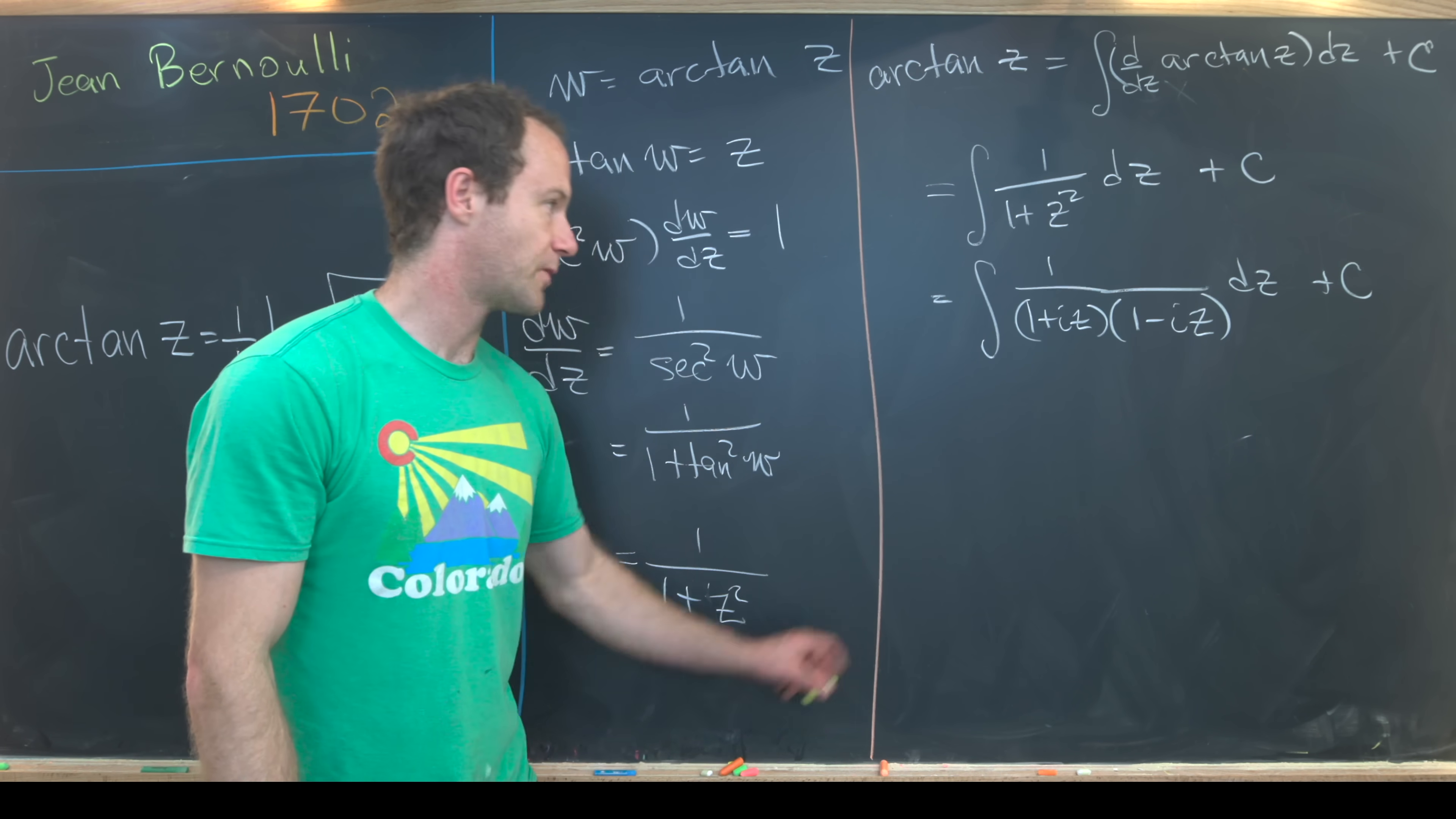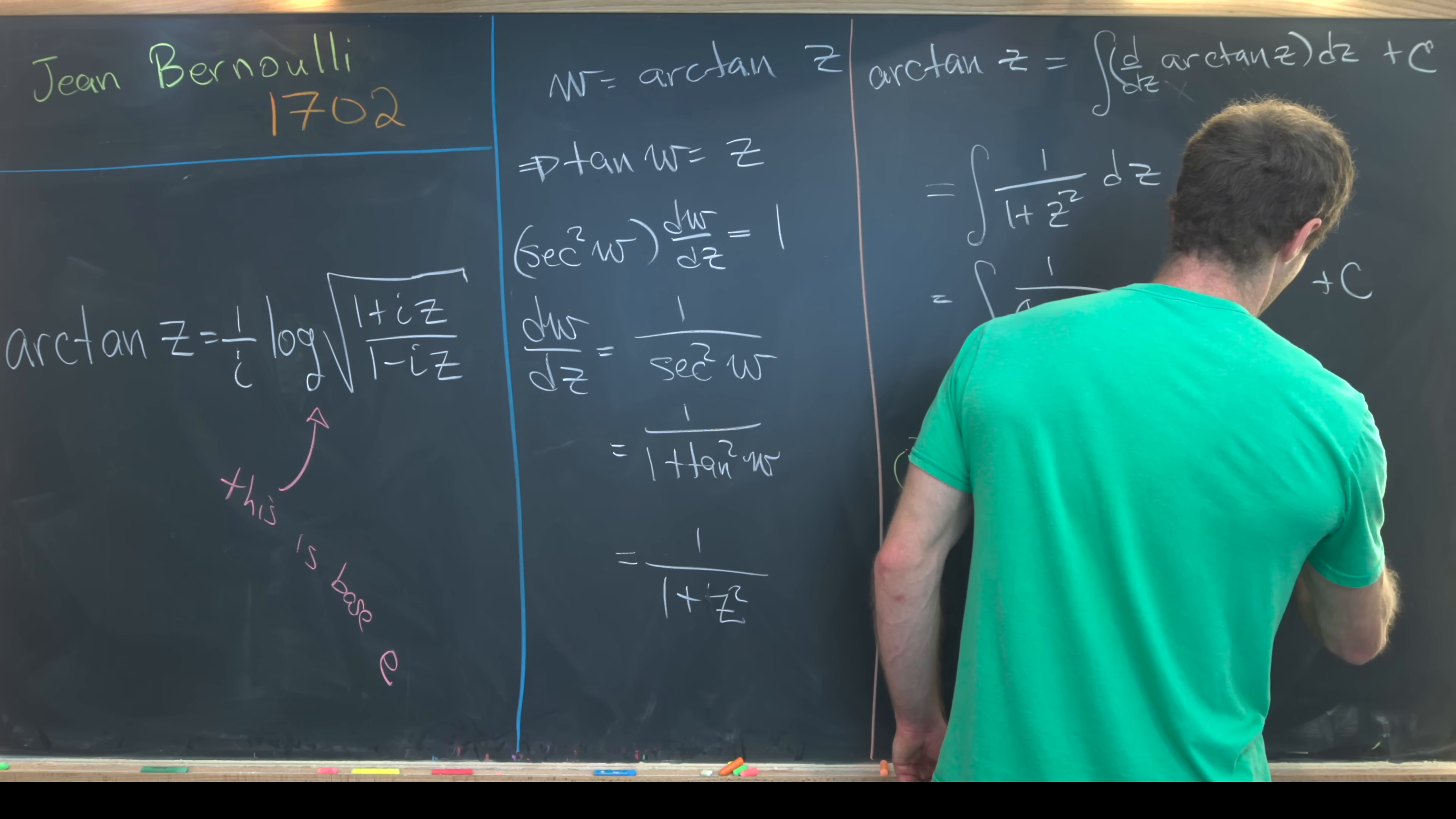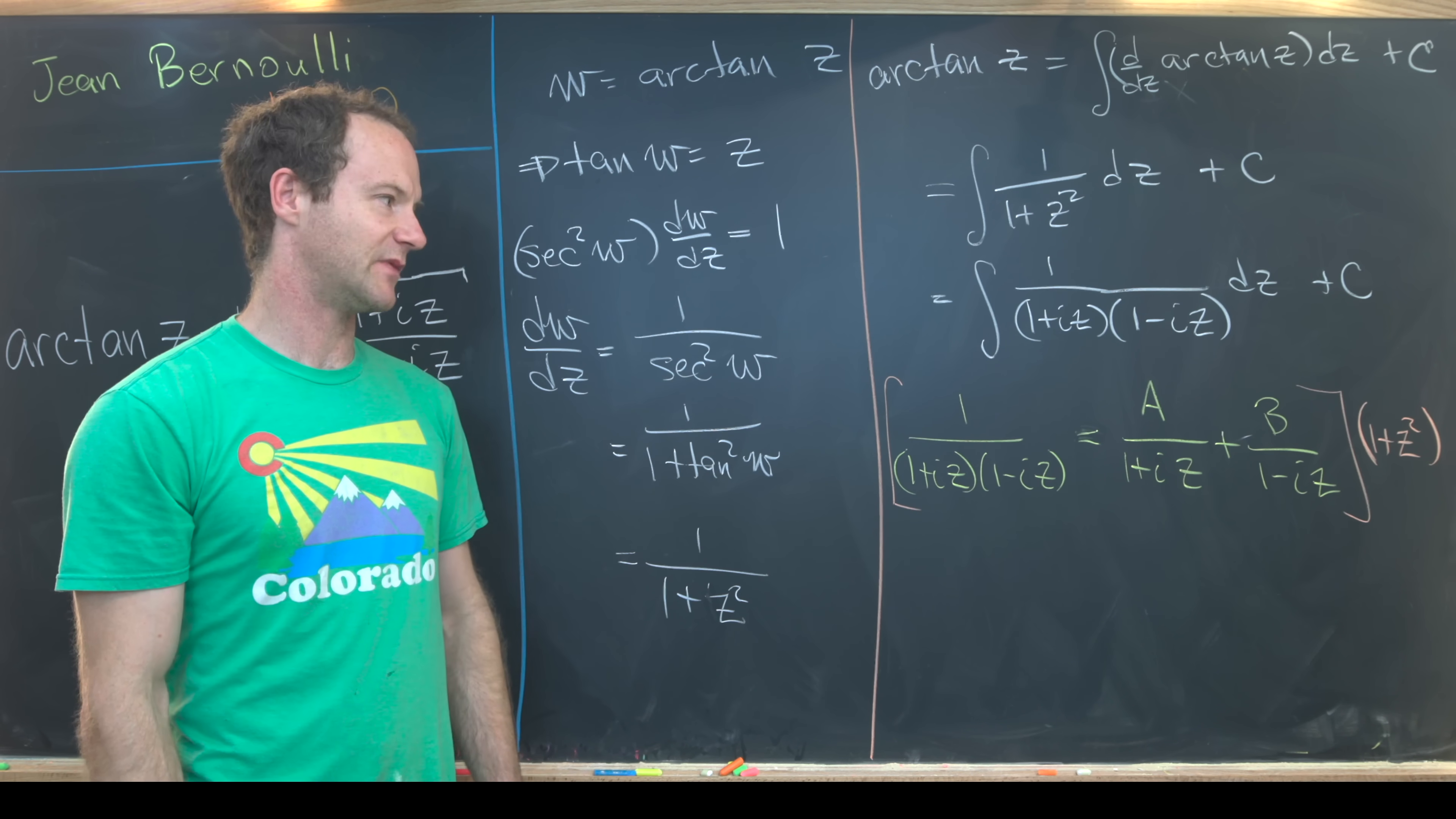Now we're going to do partial fraction decomposition on the integrand. We're going to take this thing, one over (one plus iz) times (one minus iz), and hopefully decompose it as a over (one plus iz) plus b over (one minus iz), where we have to determine a and b. From here, we can multiply by one plus z squared, that's this product, in order to clear the denominators.